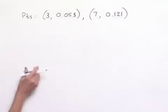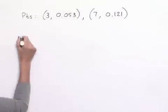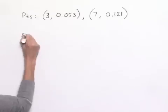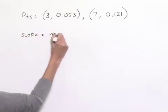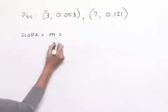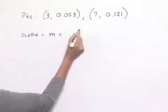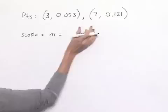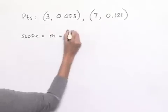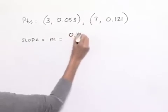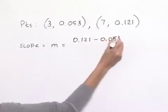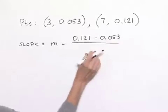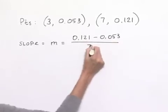In Part A, we're supposed to take the two points that are given in the voice balloons and come up with an equation of a line. To start off with, we're going to have to find the slope of that line. Recall that we can use the variable m to stand for slope. To find the slope, we're going to take the difference in our y values divided by the difference in our x values. So we're going to have in our numerator 0.121 minus 0.053 divided by, in the denominator, 7 minus 3.